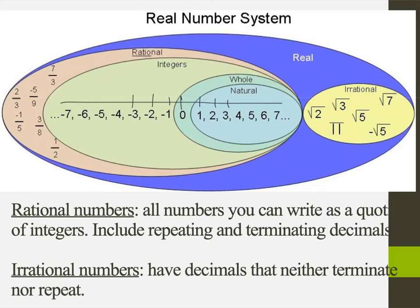Integers are positive and negative whole numbers — positive and negative versions of that. That's what our integers are. Now rational numbers — those are fractions, numbers that can be represented as a fraction. So you've got your 1 half, 3 eighths, so on and so forth.